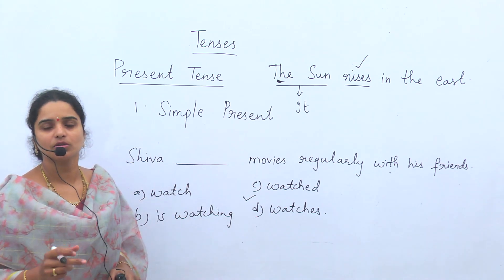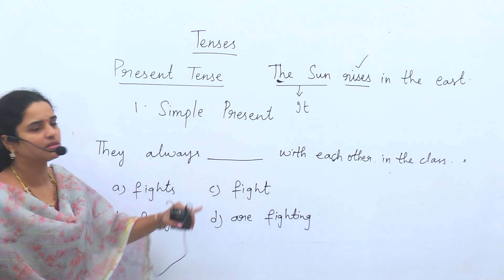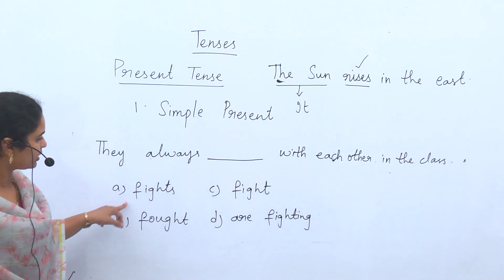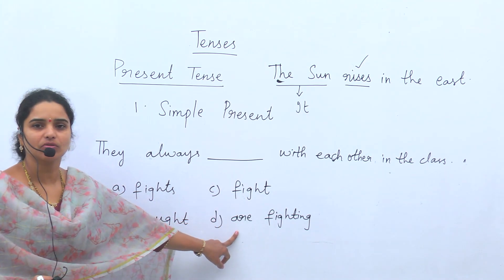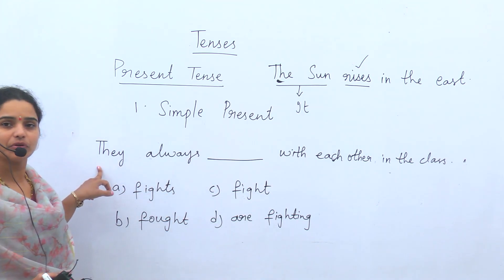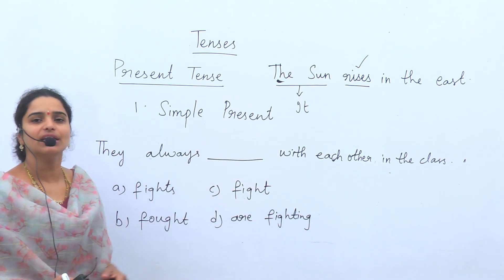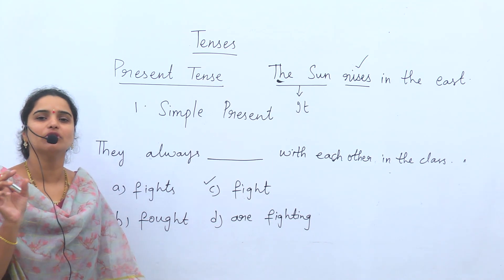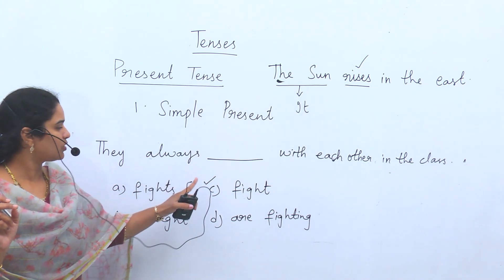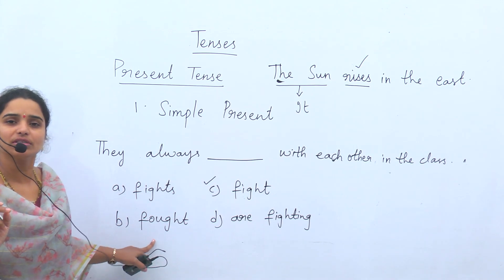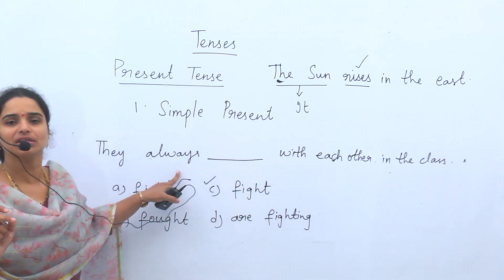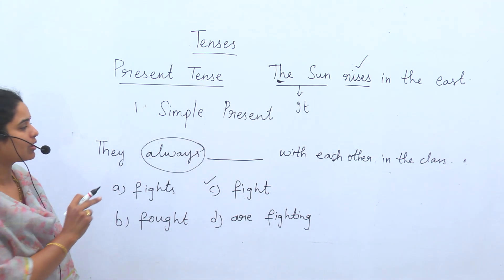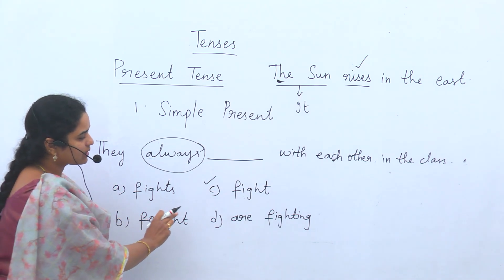Next example: 'They always ___ with each other in the class.' Options are: fights, fought, fight, are fighting. Here the clue word is 'always' — always is a clue word for simple present tense. The subject is 'they'. Only for he, she, it do we use the verb with S or ES. 'Fought' is past tense V2 form — the sentence is in present tense so that is wrong. Answer is 'fight' because the subject is 'they': 'They always fight with each other in the class.'